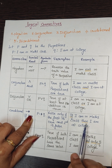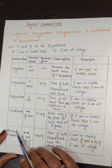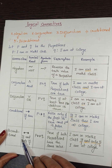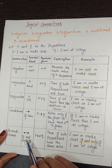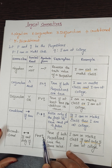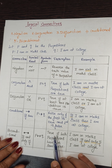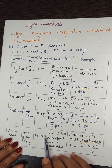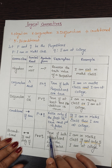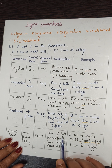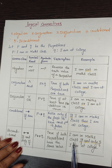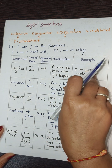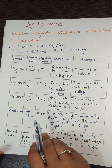Bi-conditional is shown with a double arrow (↔) and is read as 'p if and only if q.' It is true when both propositions have the same truth value — both true or both false — otherwise it is false. Example: 'I am in a maths class if and only if I am at a college.'